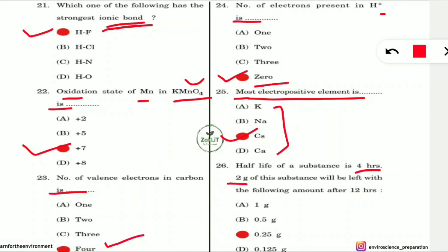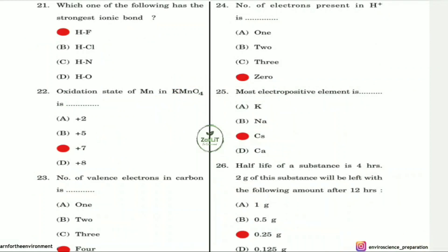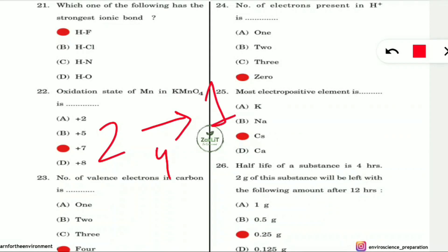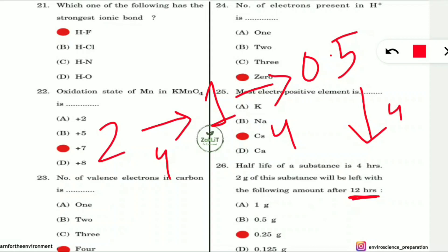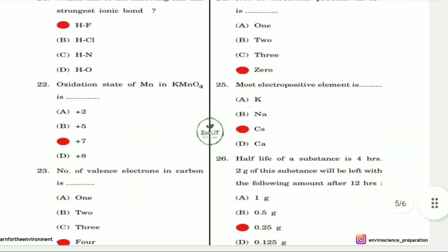Question 26: The half-life of a substance is four hours. Starting with two grams, how much will remain after 12 hours? After 4 hours: 1 gram. After 8 hours: 0.5 gram. After 12 hours: 0.25 gram. Since half-life is 4 hours, you halve the amount every 4 hours, giving 0.25 gram after 12 hours.